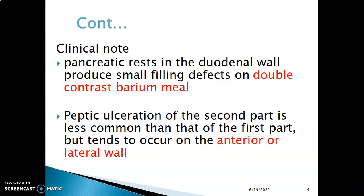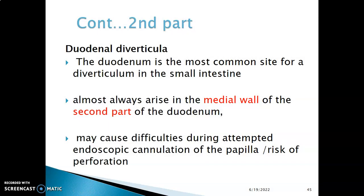The pancreas usually rests on the duodenal wall — the C of the duodenum — and can produce filling defects when you do a contrast study, which we call double contrast barium meal. Peptic ulceration of the second part of the duodenum can also occur but is less common than in the first part; it commonly occurs on the anterior and lateral wall. Duodenal diverticula occur most commonly in the duodenum among small intestine sites, typically on the medial wall of the second part, and can make endoscopic cannulation difficult and predispose to complications.